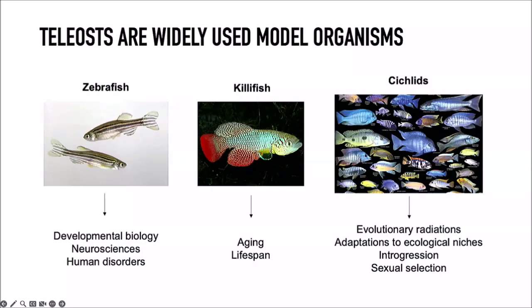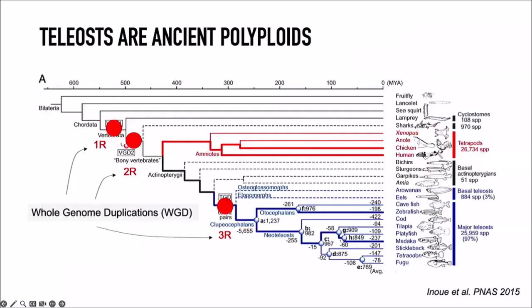Something that makes fish a complicated model is that they are ancient polyploids — they went through rounds of whole genome duplication, where the genome completely duplicates and goes from a normal diploid genome to one with four chromosomes of each type. This happened several times during vertebrate evolution. There are two well-documented instances very early in vertebrate evolution — the 1R and 2R — which we share with teleost fishes, making us ancient octoploids.